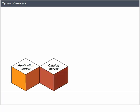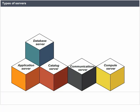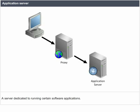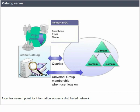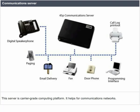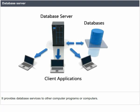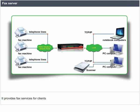Types of servers include application server, catalog server, communication server, compute server, database server, fax server, file server, and game server. An application server is dedicated to running certain software applications. A catalog server is a central search point for information across a distributed network. A communications server is a carrier-grade computing platform for communications networks. A compute server is intended for intensive computations, especially scientific. A database server provides database services to other programs or computers. A fax server provides fax services for clients. A file server provides remote access to files. A game server allows video game clients to connect and play online together.